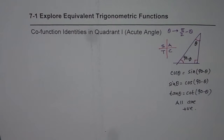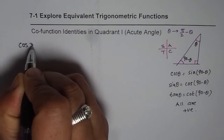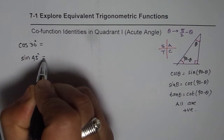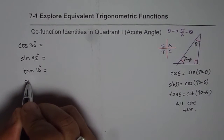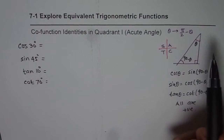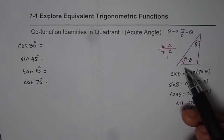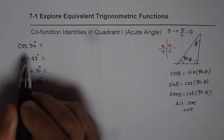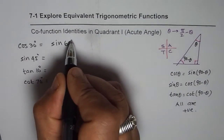Let me give you a few examples, starting with degrees. What is the co-function identity for cos of 30 degrees, sine of 45 degrees, tan of 10 degrees, and cotangent of 70 degrees? Whenever you look at pi by 2 minus theta, you are looking from the other side of the triangle, so the opposite becomes adjacent. For cos of 30°, we write sine of 90 minus 30, which gives sine of 60 degrees.